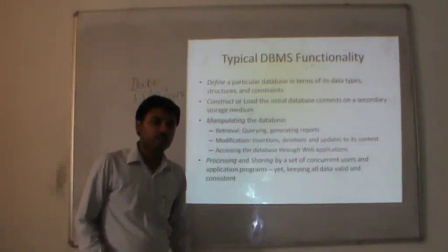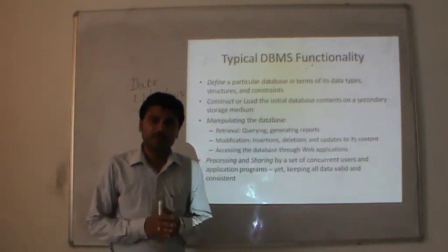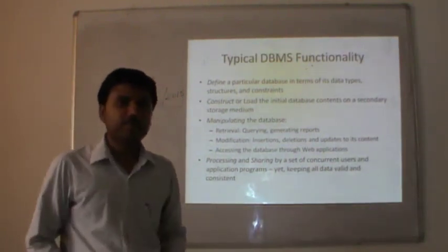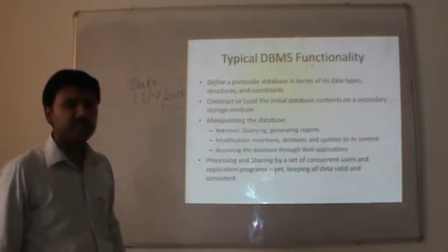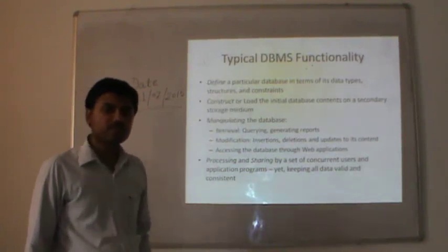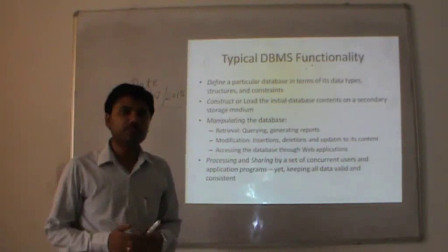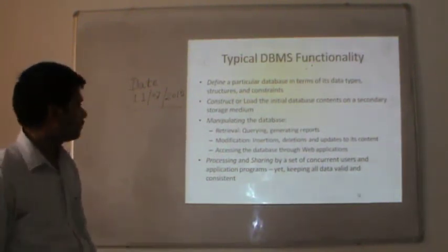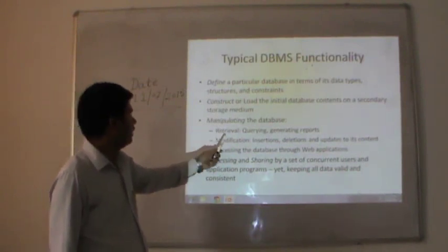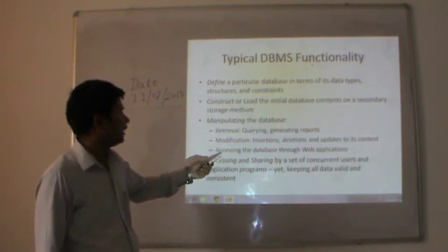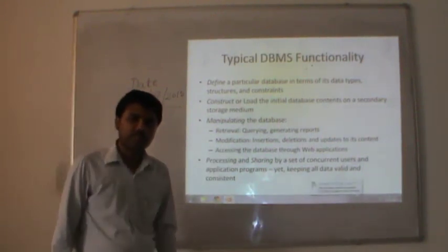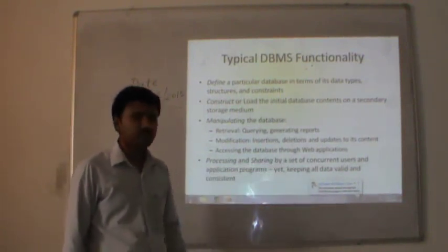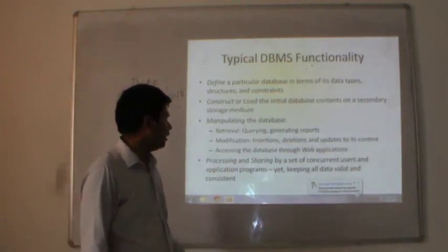Since this is our very first lecture, we will discuss all the basic terminologies and concepts in database management systems. What is the basic functionality of a DBMS? It defines a particular database in terms of data types, structures, and constraints. Constraints show some restrictions or limitations on the attributes. It constructs and loads the initial database contents on secondary storage. It also helps manipulate the database — retrieval, modification, or accessing it from different applications, whether standard applications, desktop, or web applications. It also helps with processing and sharing by a set of concurrent users and application programs while keeping all data valid and consistent.